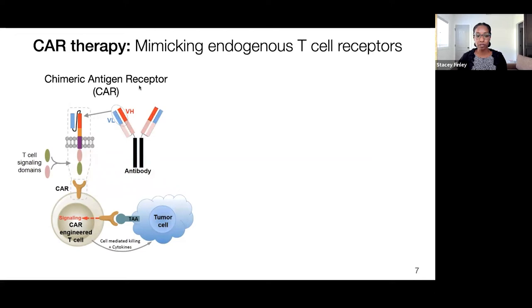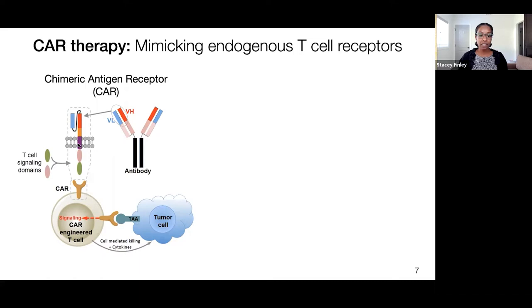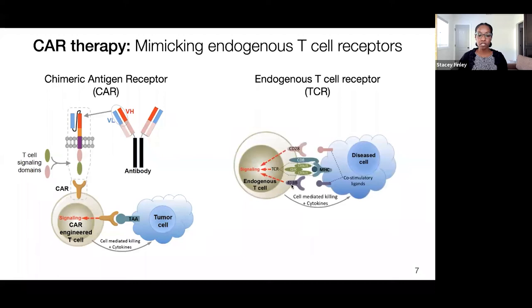When we say CARs, we mean chimeric antigen receptors. CARs are engineered receptors that can be expressed on the surface of immune cells such as T cells or natural killer cells, leading to the binding and recognition of a tumor-associated antigen presented on the surface of tumor cells. That can lead to activation of signaling cascades inside the immune cell, secretion of cytokines and other cytotoxic factors that can target and kill the tumor cell. This recognition is made possible because the extracellular domain of the CAR is derived from an antibody specific to the antigen of interest, combined with intracellular signaling domains derived from endogenous T cell receptors — really trying to mimic what happens naturally inside the body.